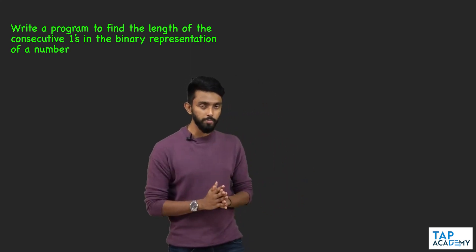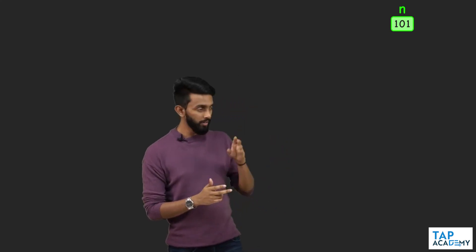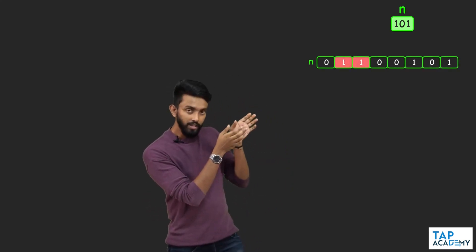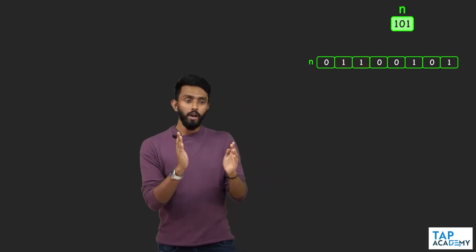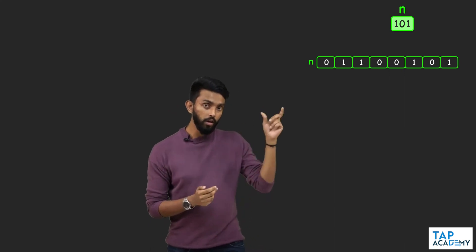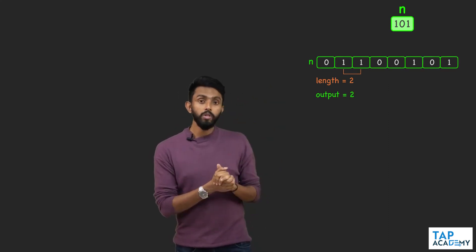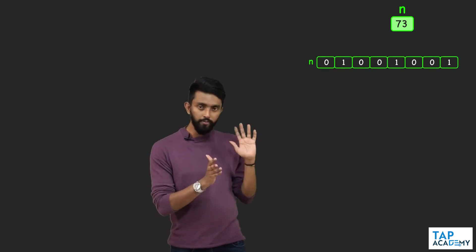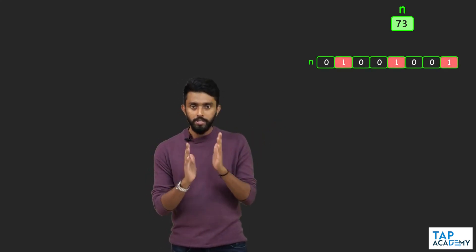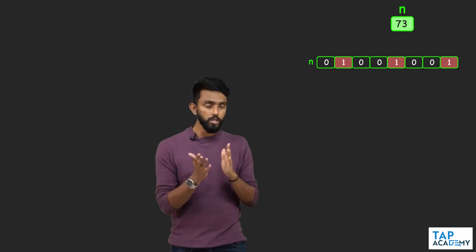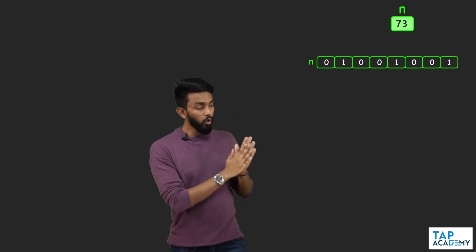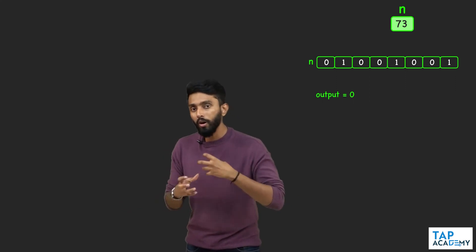Let me explain. If n is 101, that is the binary representation of n. As you can see, there are consecutive ones — ones that come next to each other. The highest length of consecutive ones here is 2, so your answer should be 2. Now if n was 73, this is its binary representation. There are ones, but none are next to one another — they are not consecutive. So the output should be 0 because there are no consecutive ones.